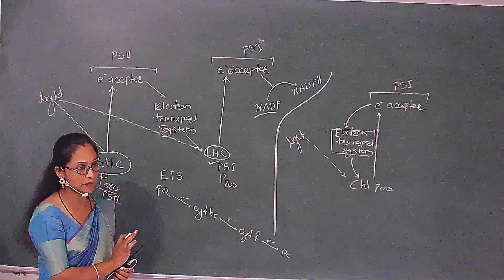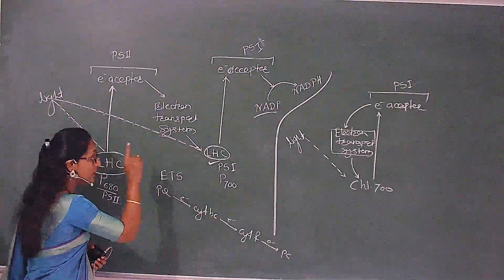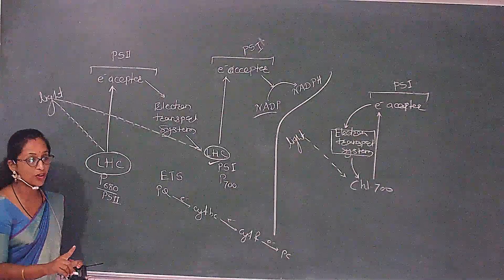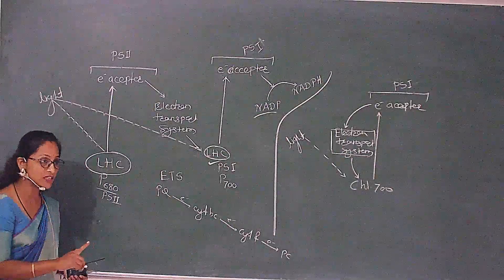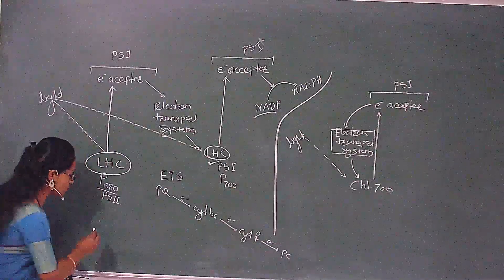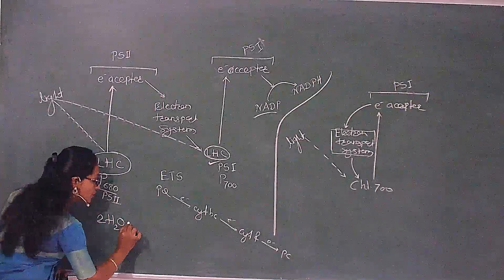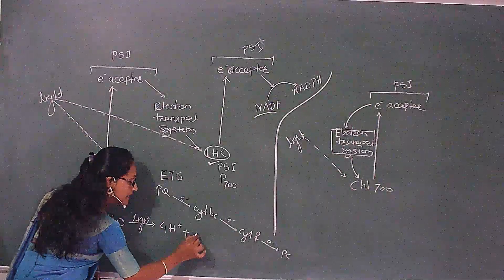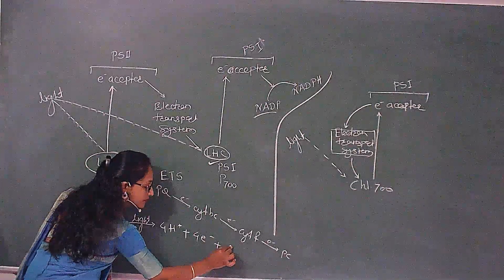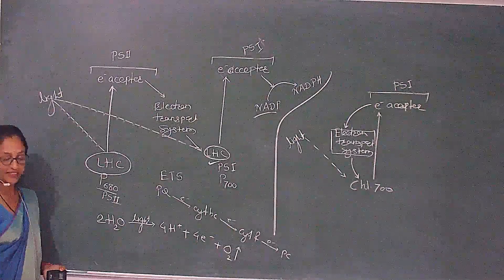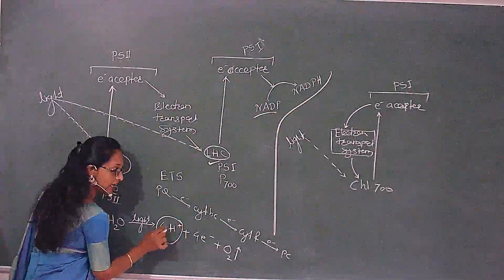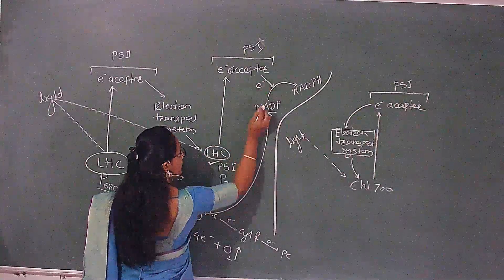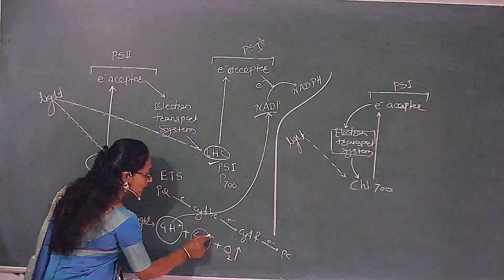NADP accepts the last electron plus it also accepts protons. Why? Because here photolysis of water is taking place — breakdown of water in the presence of light. Hydrolysis of water in the presence of light is called photolysis of water. So here: 2H₂O in the presence of light gives 4H⁺ (4 protons) plus O₂ evolved. So the 4 protons formed here — NADP will accept them.